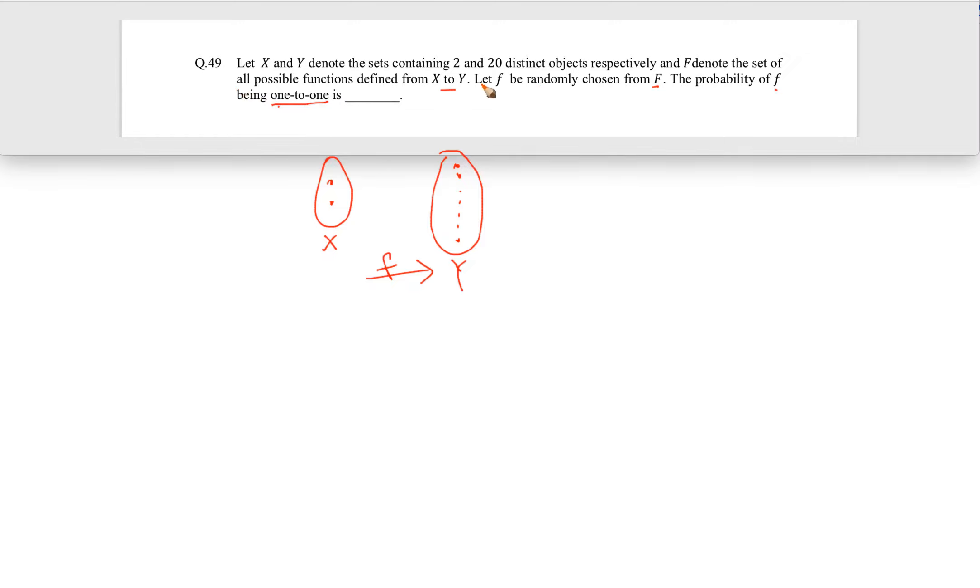Whatever all possible functions are defined, they're asking which means that the probability P which we have to give answer is basically the ratio of total number of functions. In the entire set, the total number of functions is in the denominator. In numerator will be total number of one-to-one functions.